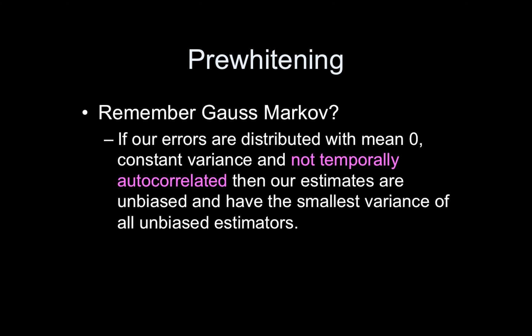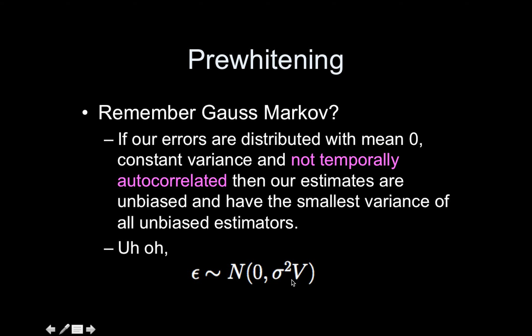So why do we need pre-whitening? Gauss-Markov says if our errors are distributed with a mean of zero, constant variance, and are not temporally autocorrelated, then our estimates are unbiased and have the smallest variance of all unbiased estimators. Unfortunately, the assumption of not being temporally autocorrelated is violated for our BOLD time series. Our error term actually involves a covariance matrix V — a T-by-T matrix describing the correlation between all time points.